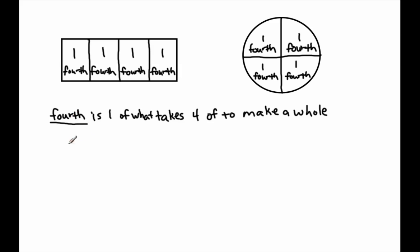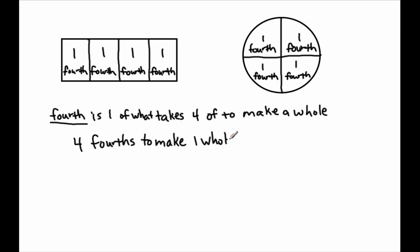So this is why we call it a fourth. We kind of know how many fourths it takes to make a whole — let's count: one, two, three, four. Four what? Four fourths. It takes four fourths to make one whole. The other way of saying this is: four fourths are the same as one whole.